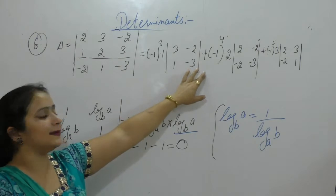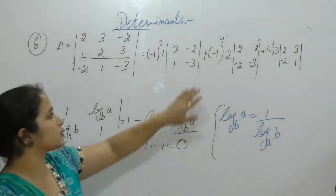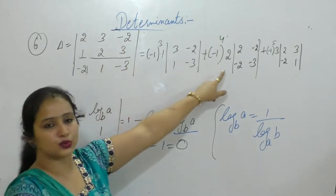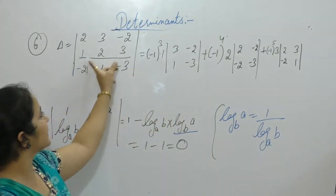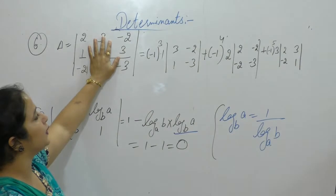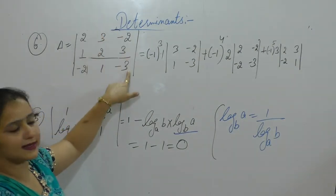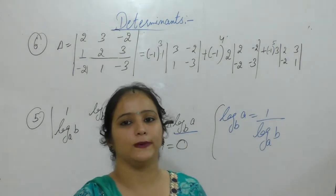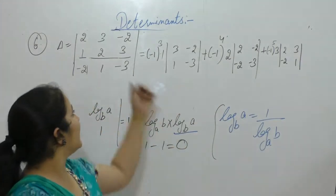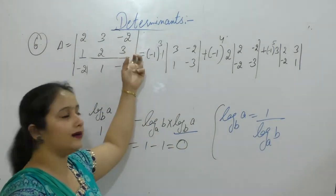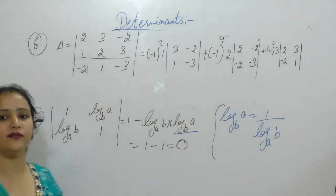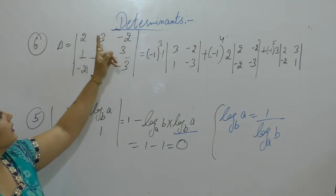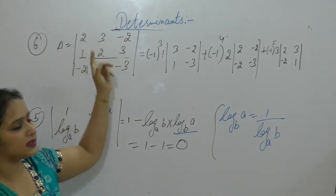Third element at position (2,3): (-1)^(2+3) = (-1)^5, and the element is 3. After leaving second row and third column, we get the 2x2 matrix: 2, -2 / 3, 1. Now solve each 2x2 determinant: (-1)^3 into 1 into [3×(-3) minus (-2)×1], plus (-1)^4 into 2 into [2×(-3) minus (-2)×(-2)], plus (-1)^5 into 3 into [2×1 minus (-2)×3].